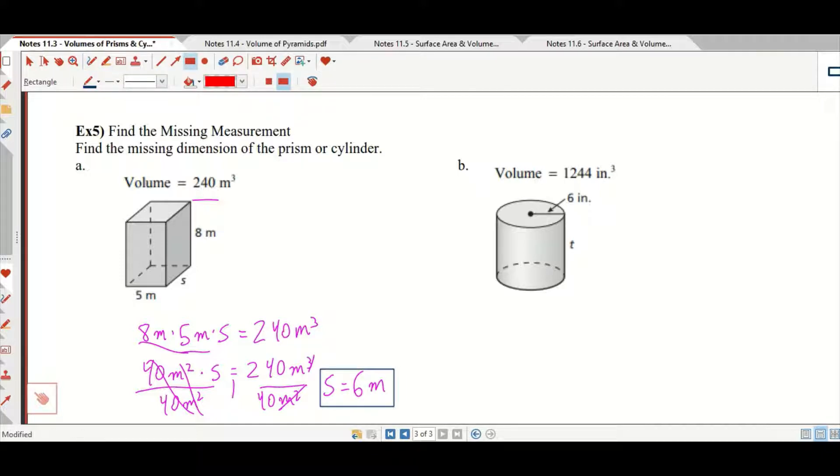Now that makes sense. If you go back, 5 times 6 times 8 is going to give you that 240 you wanted. So remember that the volume of a cylinder, which in this case is actually given to us as 1244 inches cubed, is equal to pi times the radius squared, which in this case is 6 inches squared times the height, which we don't know.